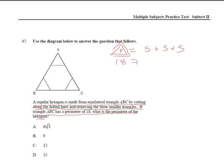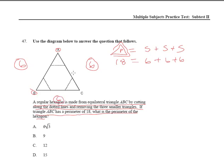You know that 6 plus 6 plus 6 equals 18. So on side AB of this triangle, that has a length of 6. For AC, that has a length of 6. For BC, that has a length also of 6. Now, what are we trying to figure out? We're trying to figure out the perimeter of the hexagon.